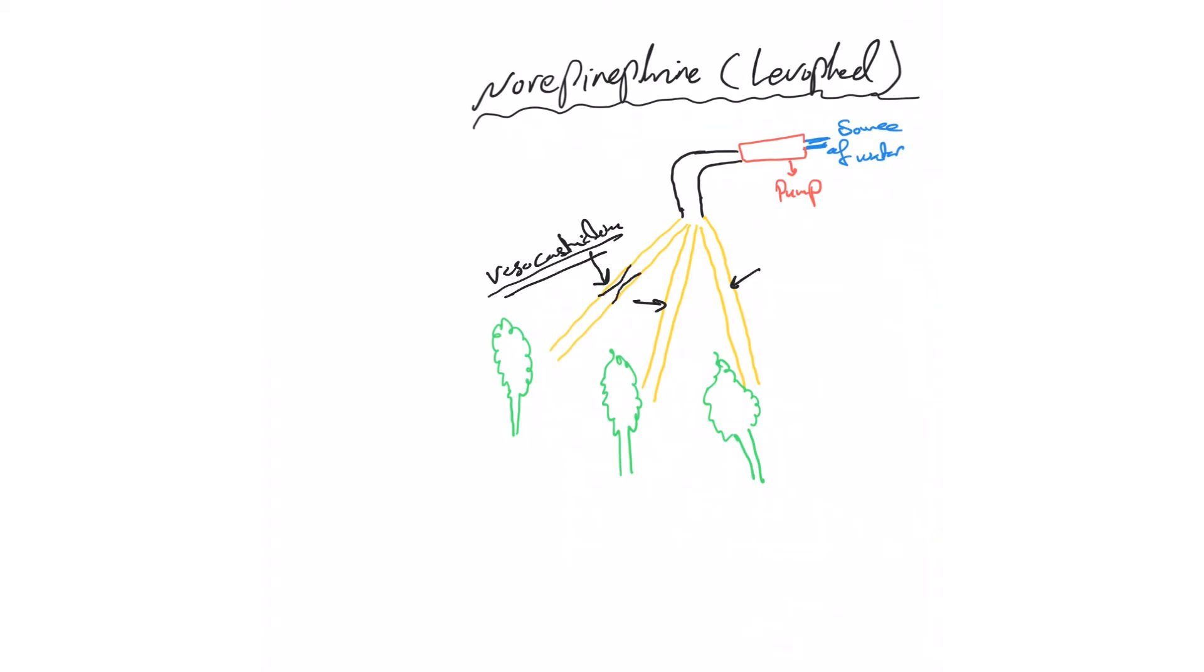When this hose becomes narrower, if you have the same volume going through a small diameter, the pressure will increase. That's the first thing. Also, levofed or norepinephrine will work here as well by increasing the strength of this pump as well as the frequency. So it increases the pumping effect plus the frequency effect, so it has inotropic and chronotropic effects.